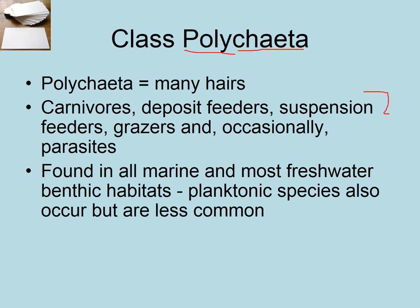These things do it all in terms of feeding: carnivores, deposit feeders, suspension feeders, grazers, parasites. We'll see a few examples of each of those in this video. Almost any animal you see in the marine environment will be a polychaete. There'll be a few leeches, and very rarely would you see an oligochaete in a marine or aquatic situation, but they are almost all benthic.